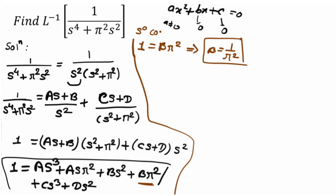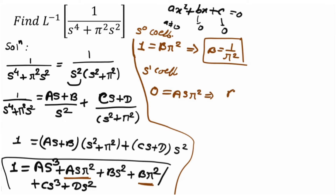Equating s to the power 0 coefficient gives us b. Now equating the coefficient of s to the power 1: the left-hand side has no s term, so it is 0. The right-hand side s term gives us A·pi squared. Equating, we get A equals 0.